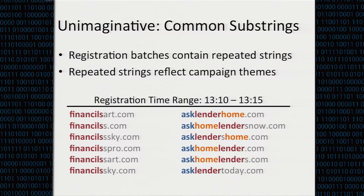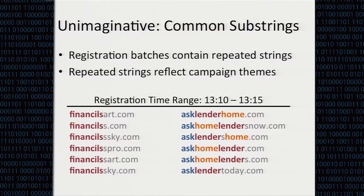Not all spammers operate that way. In the final two periods, the bulk of registrations are new domains never seen before. This leads to our third observation: spammers are unimaginative. When you have some spam kit with a particular theme, you need topically appropriate domain names. It may be very hard to get these from previously used domains, so you register new ones. Examples from an actual registration batch show common substrings indicating the common themes within the batch.